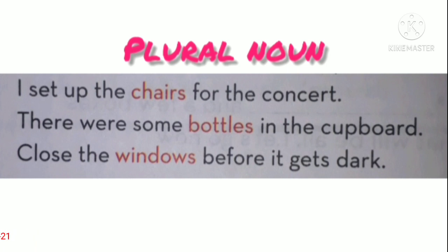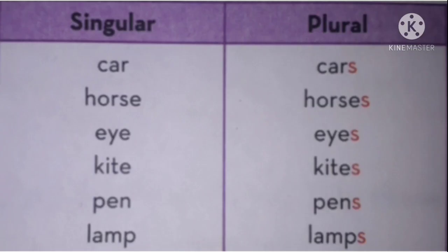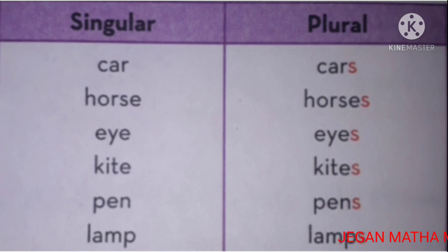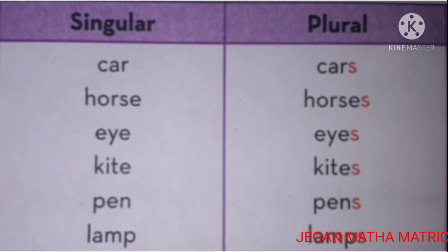Let's learn the types of plurals. Most nouns add -s to change the word from singular to plural. For example: car → cars, horse → horses, eye → eyes, kite → kites, pen → pens, lamp → lamps. Most nouns simply add -s to change from singular to plural.